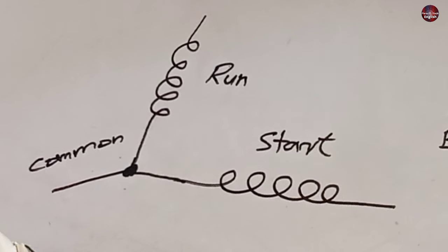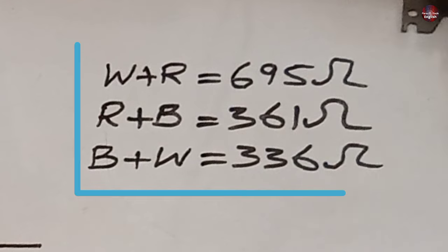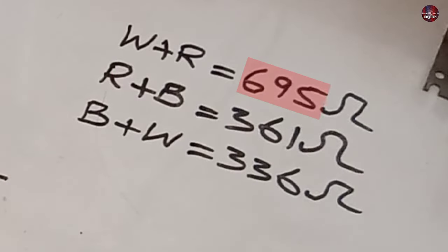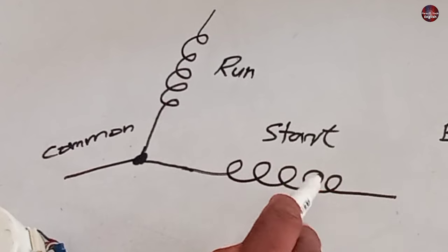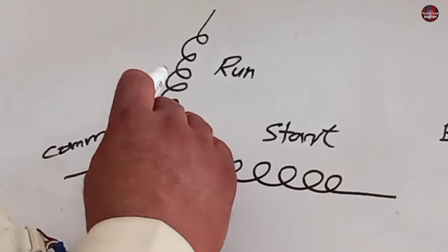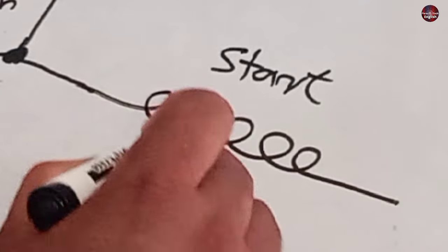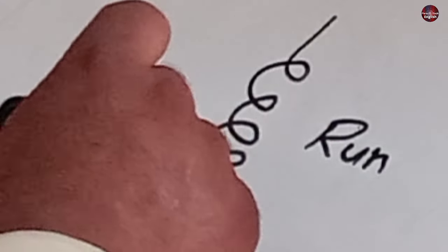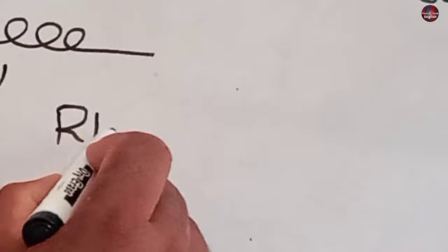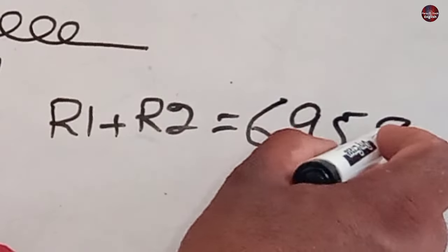Now I will tell you how to find the common, running, and starting through these values. The white and red wires gave a value of 695 ohms. This means the resistance of this winding and the resistance of this winding is showing us the values. I will name this start winding as R1 and the run winding as R2. Now I will add them both. R1 plus R2 is equal to 695 ohms.